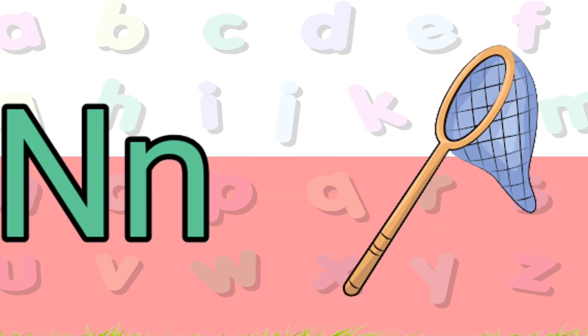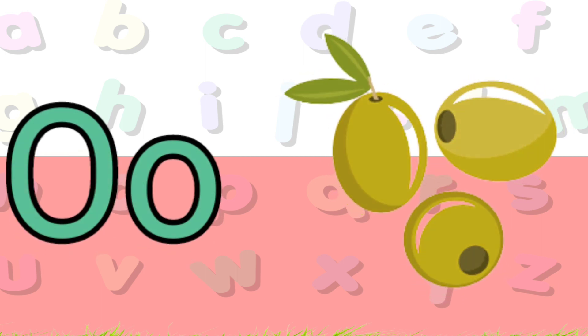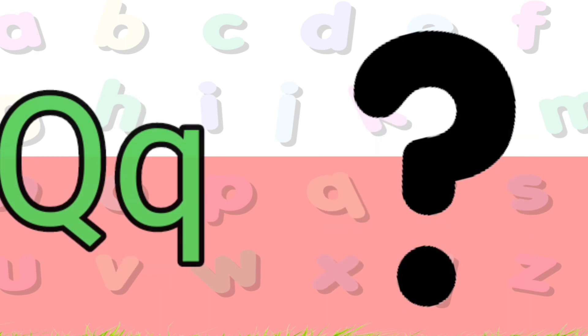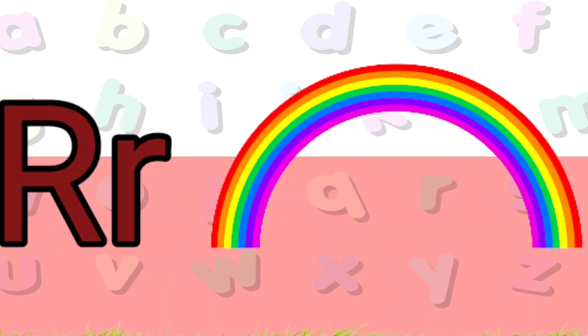N is for net, O is for olive, P is for pillow, Q is for question mark, R is for rainbow.